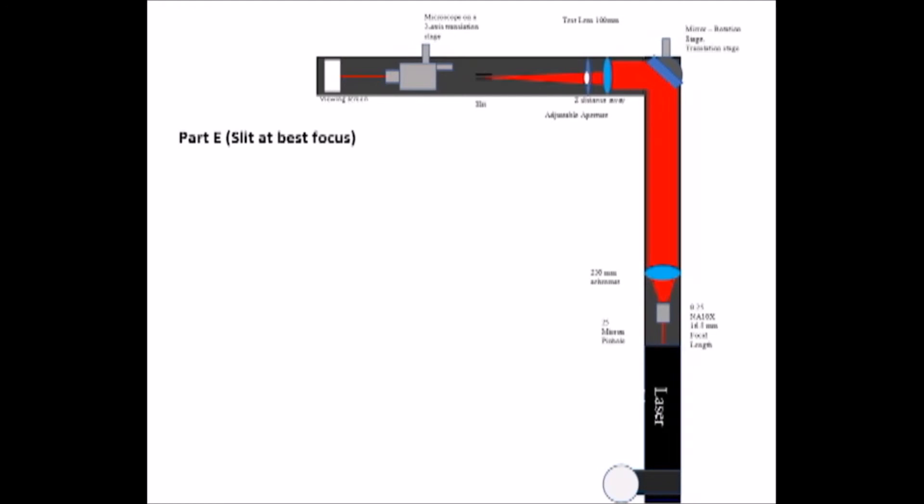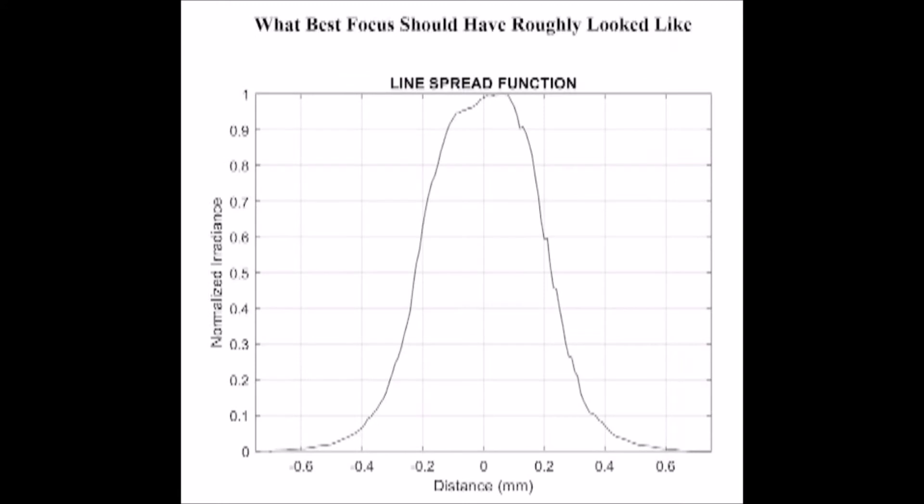Using the x-translation micrometer on the microscope, we focused on the surface of the slit and ensured that the slit was at the correct width. We expected to see an Airy disk pattern at the best focus in our raw data. This means that there should be a peak in the center since the Fresnel number is 1 and dictates constructive interference at the center.